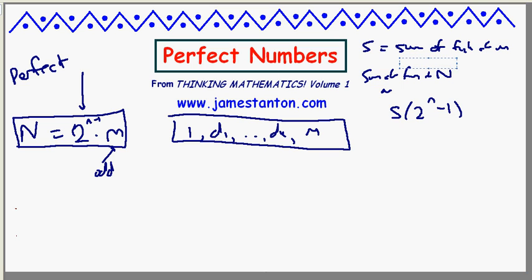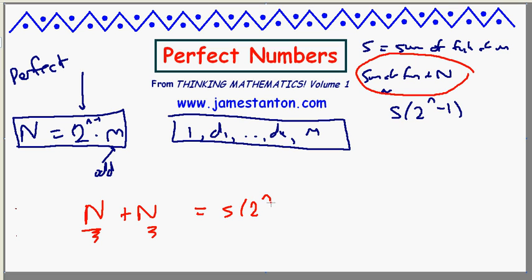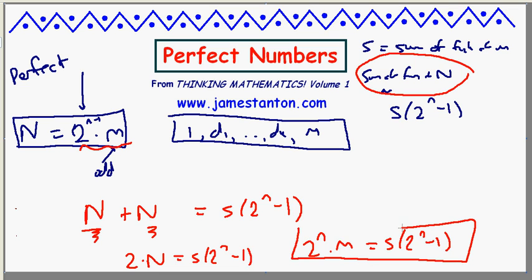Well, if the number's perfect, if I sum all the factors of n, all of them including the whole big one itself, I am going to get n plus the whole big factor itself. If the number's perfect, the sum of all the small factors up to n plus the extra n, this equals s times 2 to the n minus 1. Well, that is 2 times n is s times 2 to the little n minus 1. And what was n? Shove that in. 2 to the n times m equals s times 2 to the n minus 1. So I've got this equation to play with.